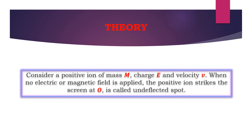Consider a positive ion of mass m, charge e, and velocity v. When no electric or magnetic field is supplied, the positive ion strikes the screen at O, which is called the undeflected spot — there is no deflection in the positive ion beam.